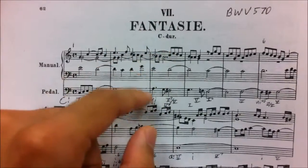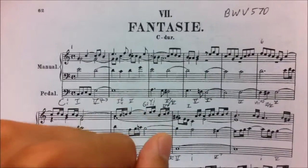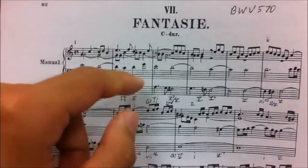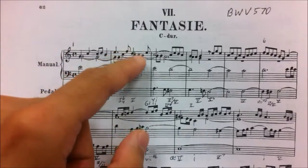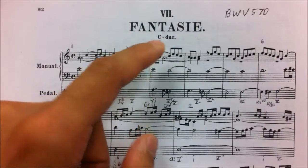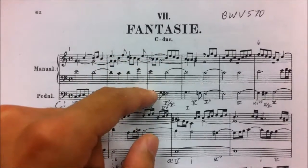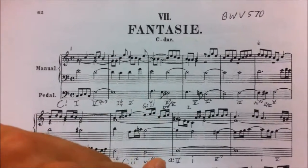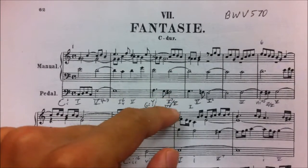In measure 3, he starts using a 2-5-1 chord progression in G major, so he's following basic music theory, and he sets up this modulation by going from a G major triad to an A minor triad, which is a 6 in C major, but a 2 in G major. And he introduces an F sharp here, so that's how we know we're in G major.